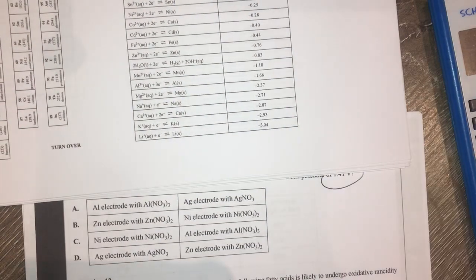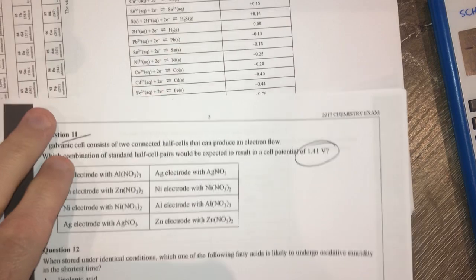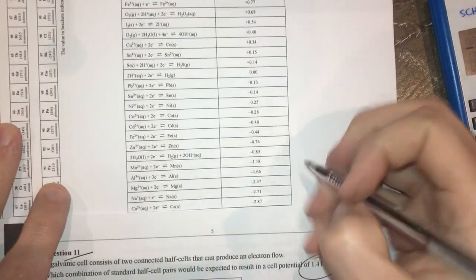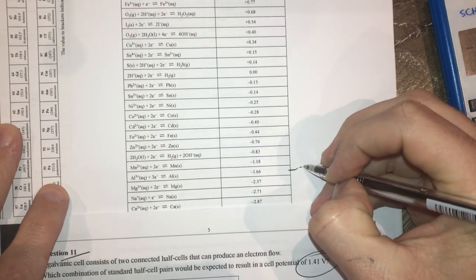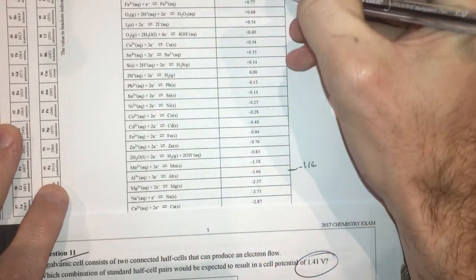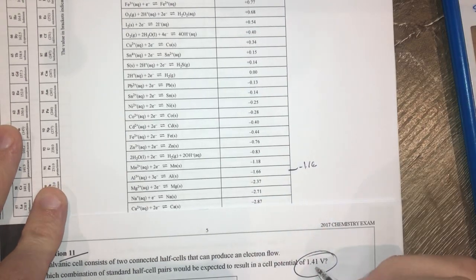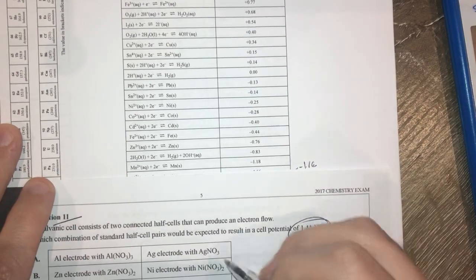That means we need our electrochemical series. So let's have a look at which combinations work for this. So Al and Ag. Al is way down here at negative 1.66. Ag is up here at positive 0.84. That's going to be way more than this voltage, so it's not going to be that one.